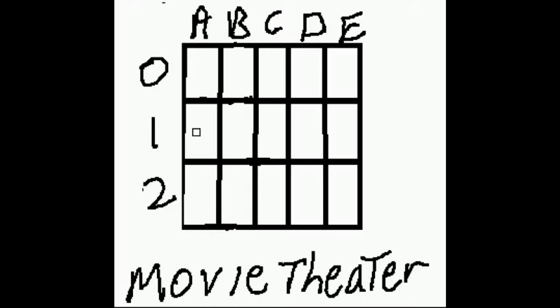There's a movie theater down the block. It's got three rows numbered 0, 1 and 2 and it's got five chairs per row lettered A, B, C, D and E. People go to this movie theater and get a seat assignment.